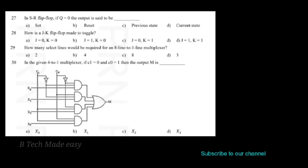Next question: in an SR flip-flop, if Q is equal to 0, what is the state? In an SR flip-flop, if Q is equal to 0, then the output is 0 and it is in the reset state. Q equal to 1 means it is set; Q equal to 0 means it is reset.